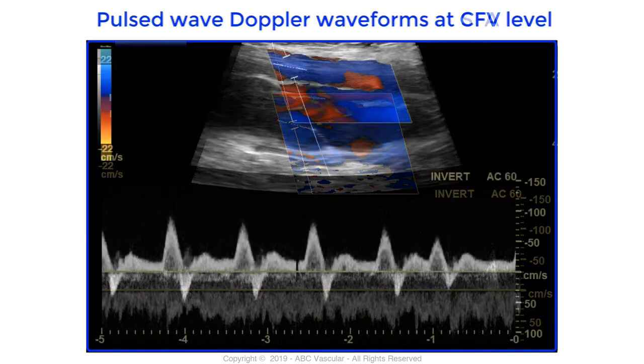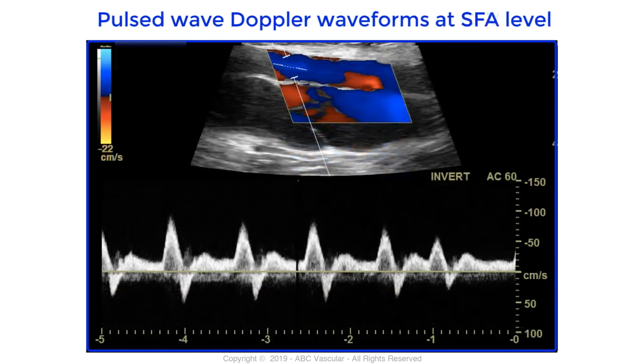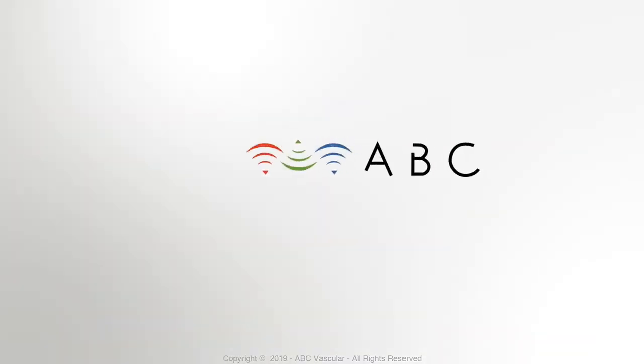The flow within the artery is of lower resistance, as demonstrated by a more prominent diastolic phase due to the presence of the arteriovenous fistula. Thanks for joining ABC Vascular Ultrasound.